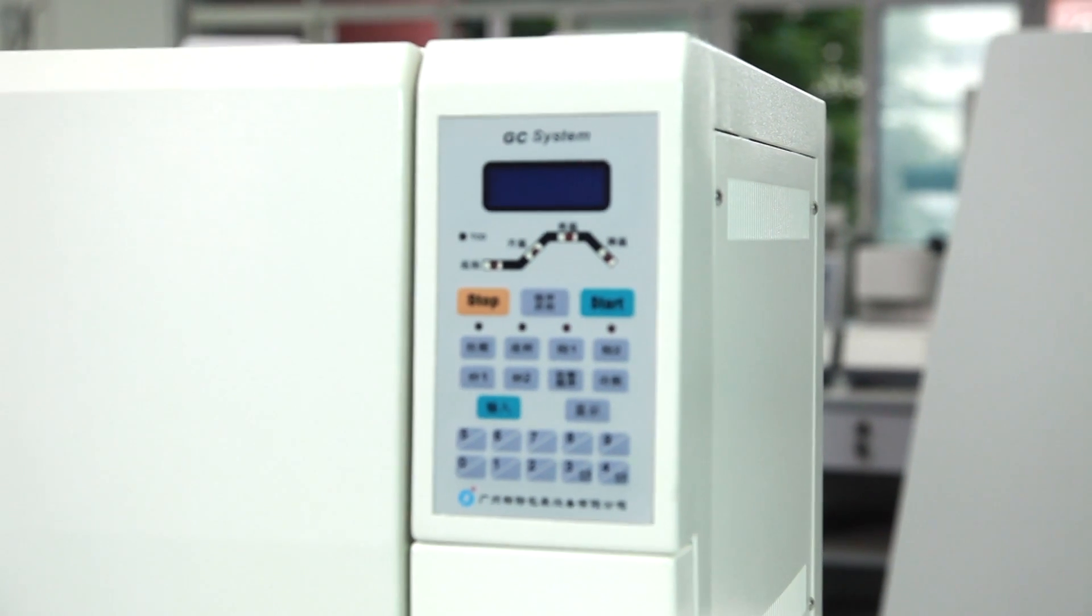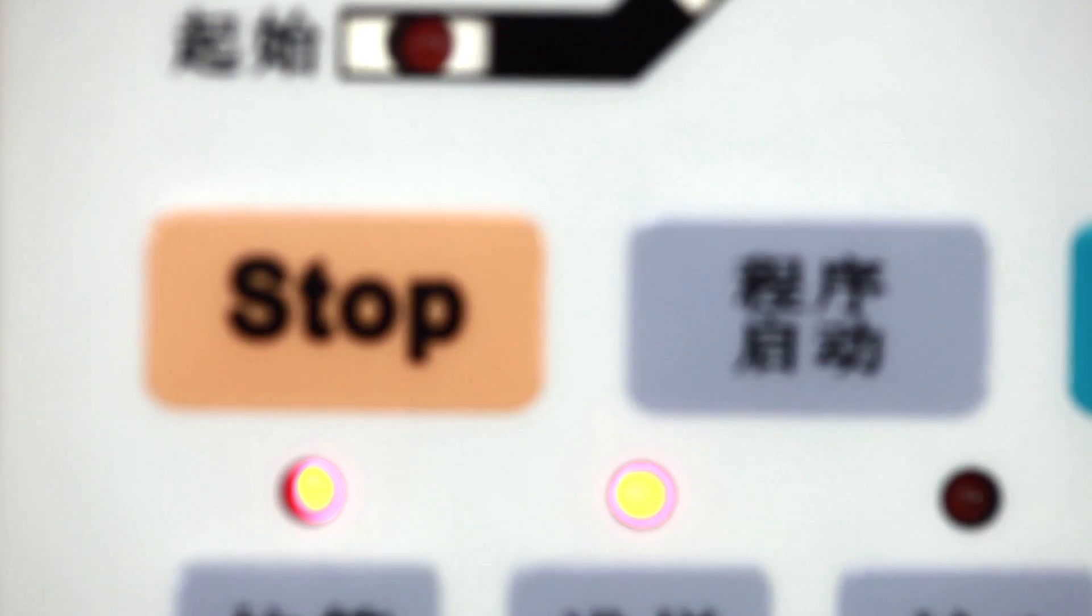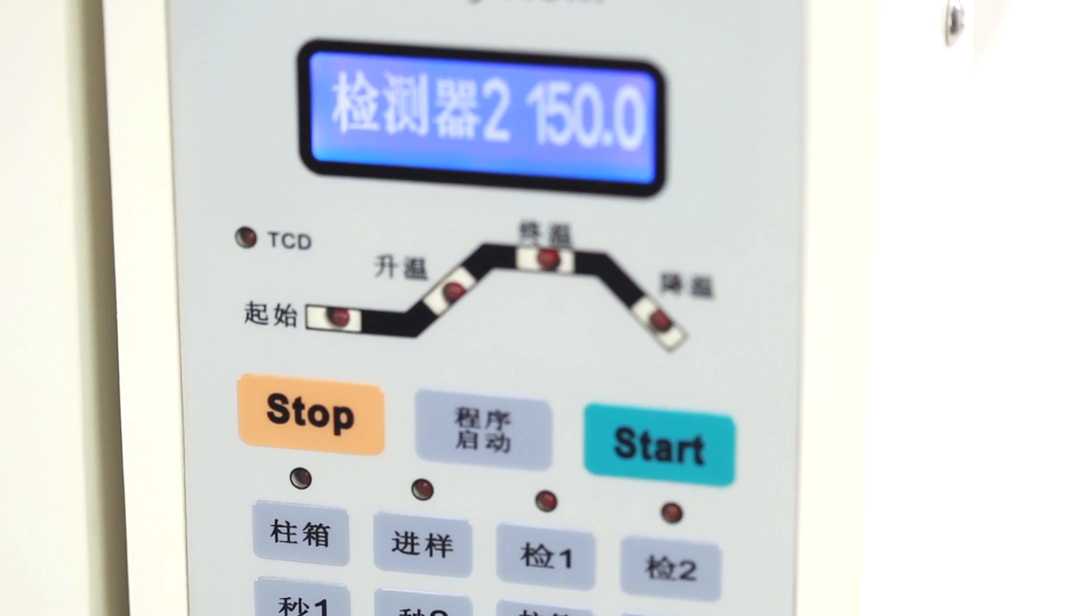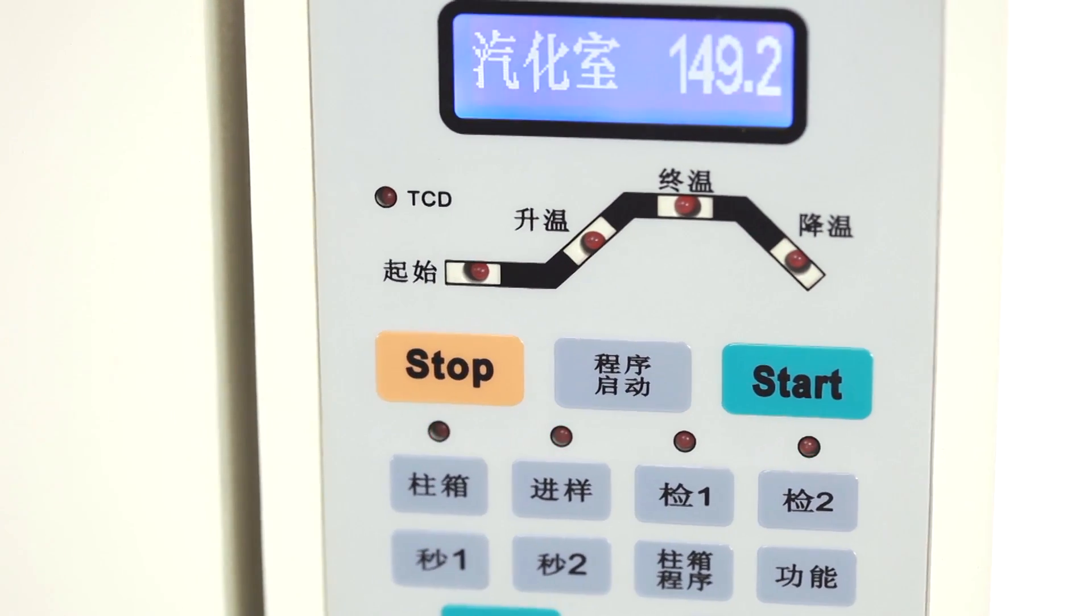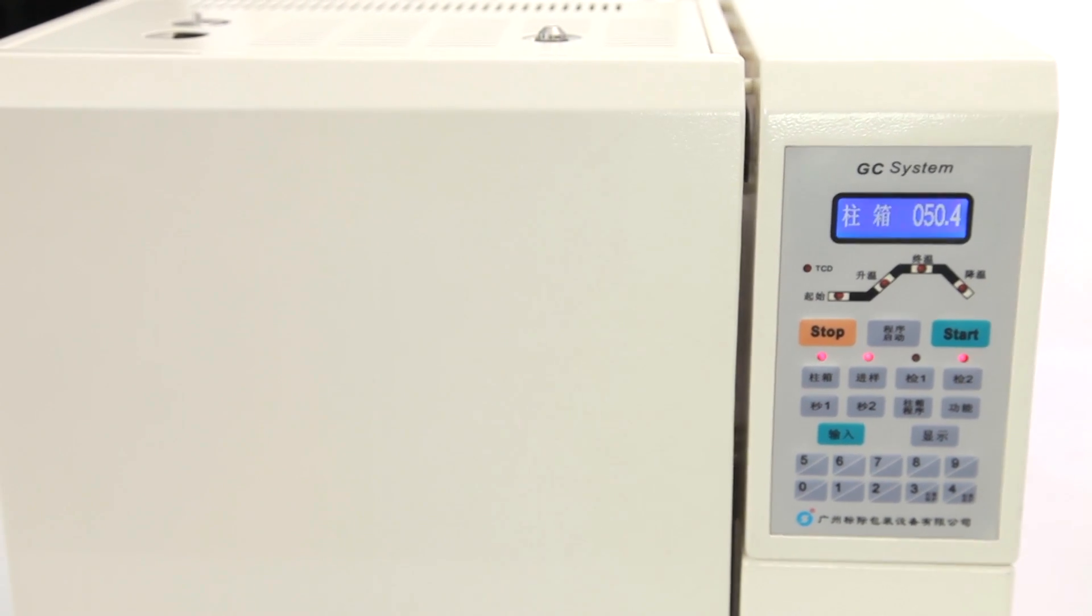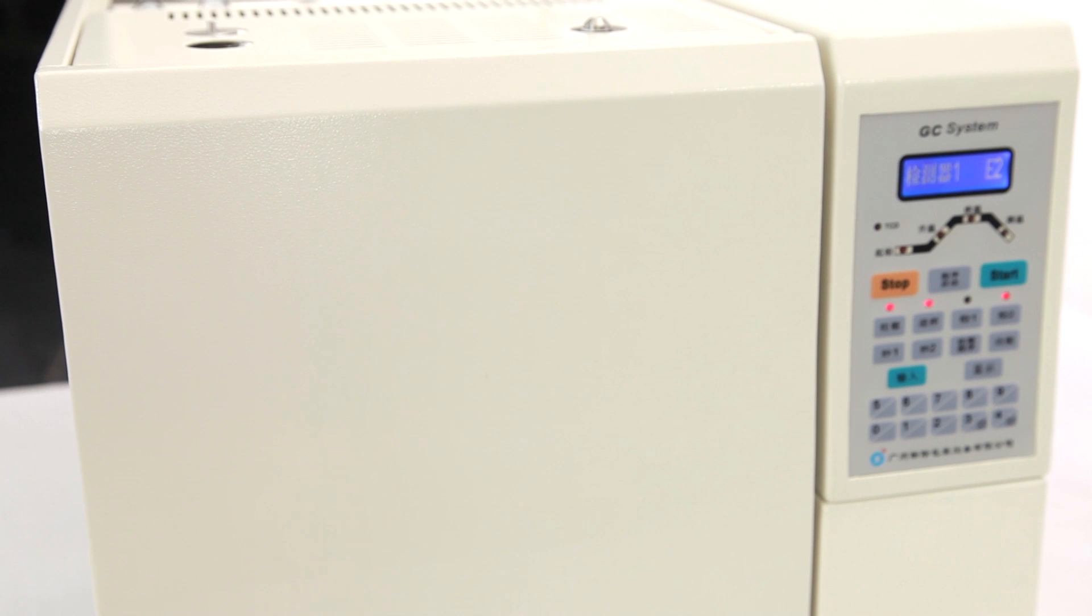Sample injection port adopts packed-column and capillary-column design. Broad-column oven, 300 x 300 x 200 mm. It is designed for complicated tasks, for different chromatographic columns and for extensive sample types.